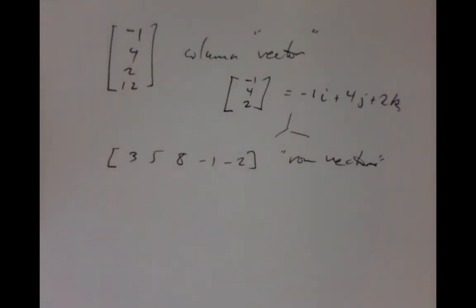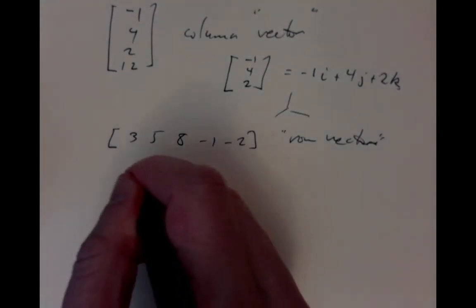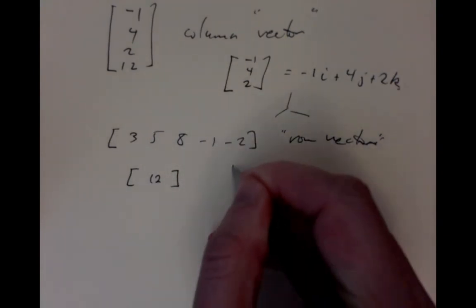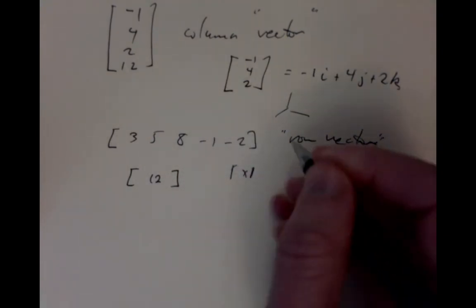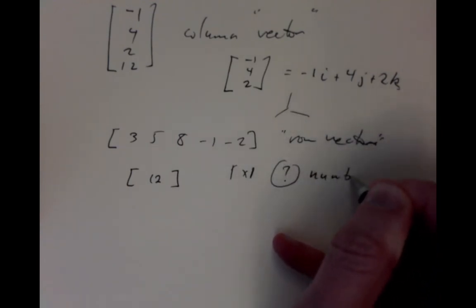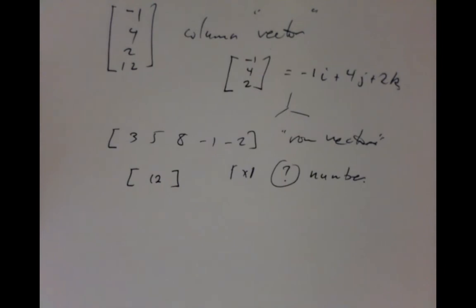And there's always a difficult issue about one by one matrices. If I have the matrix just has the number 12 in it, a one by one matrix. We'll sometimes think of that as just a number. Is that just a number or not? Sometimes we want to think that it's a number. Sometimes we want to actually say that it's a one by one matrix.